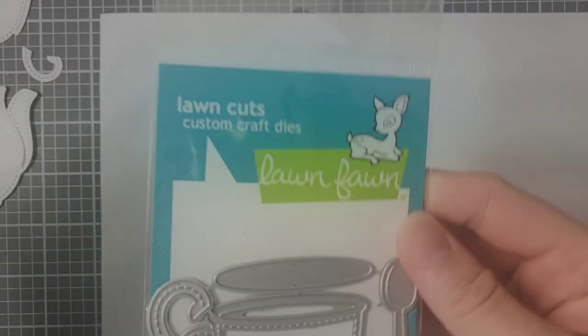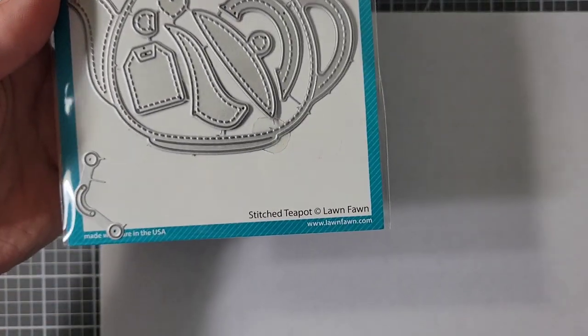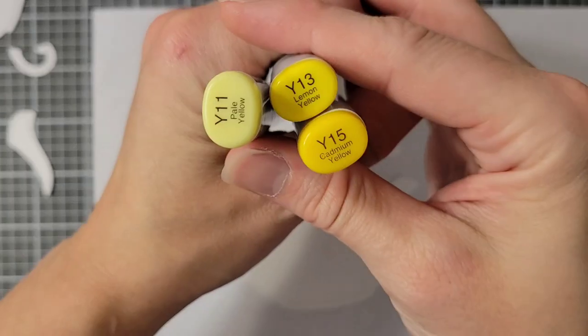This card is for the current Lawn Fawn challenge on die cuts. Here I have two of the new die sets: stitched teacup and stitched teapot.